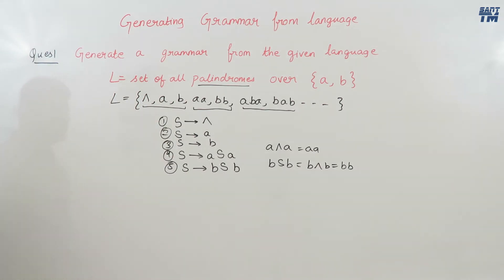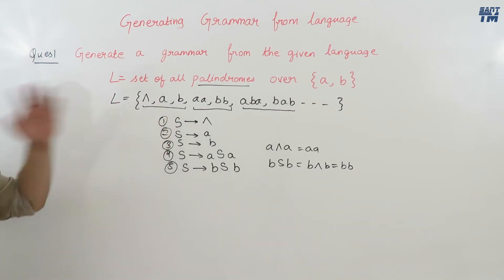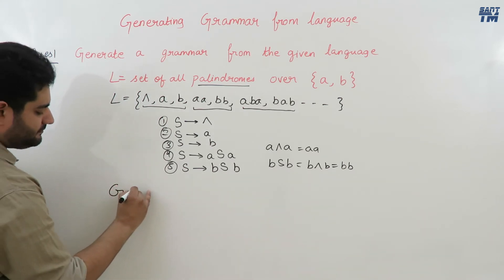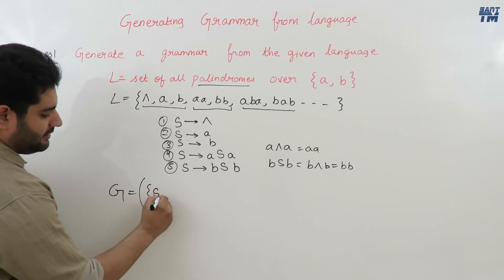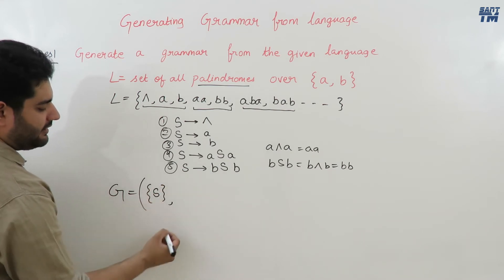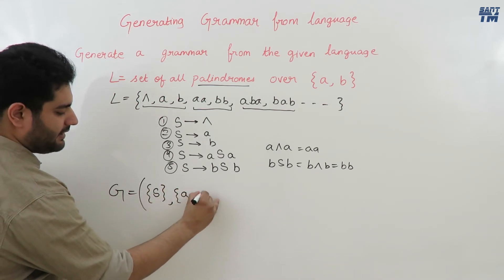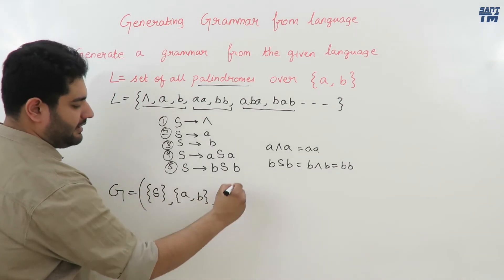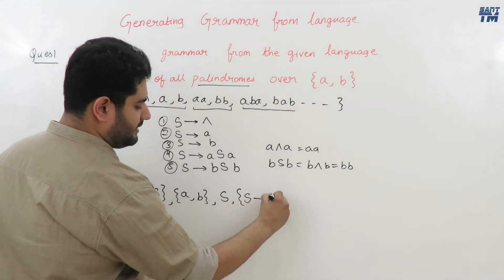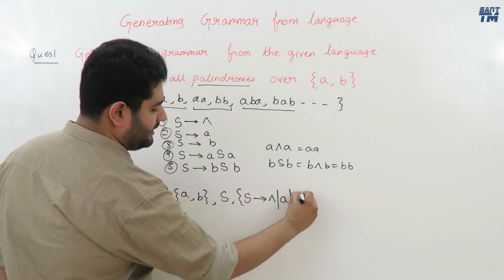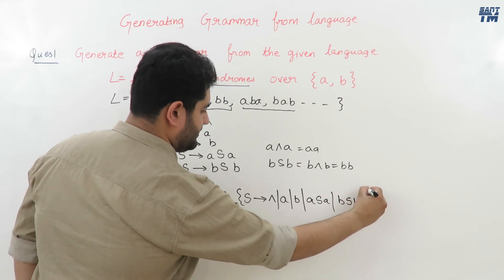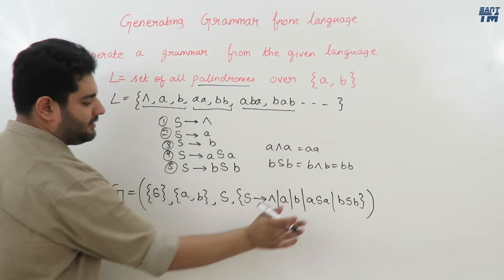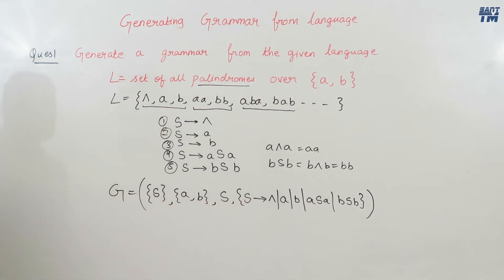All strings which are palindromes are satisfied using these production rules. So the grammar that generates this language has these five production rules. The grammar is the four-tuple (N, T, S, P) where N = {S} (only one non-terminal), T = {a, b} (the terminals), S is the start symbol, and the production rules P are: S → ε | a | b | aSa | bSb.